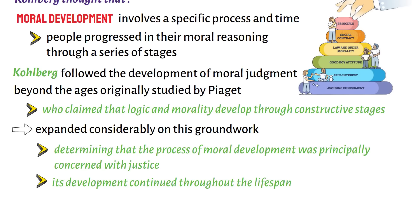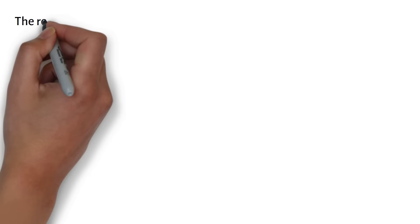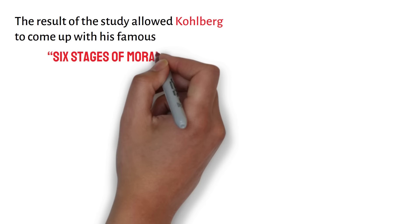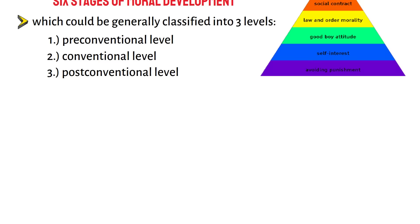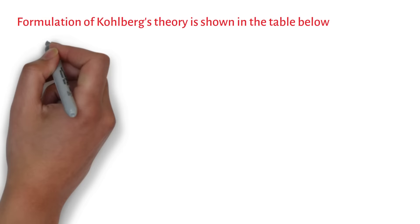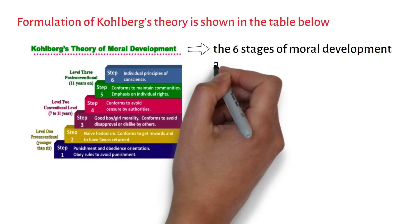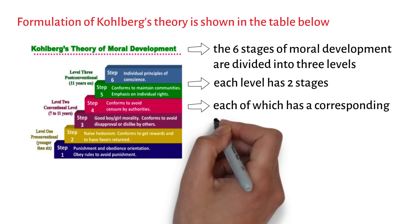The result of the study allowed Kohlberg to come up with his famous six stages of moral development, which could be generally classified into three levels: the pre-conventional level, the conventional level, and the post-conventional level. The six stages are divided into three levels and each level has two stages, each of which has a corresponding social orientation.